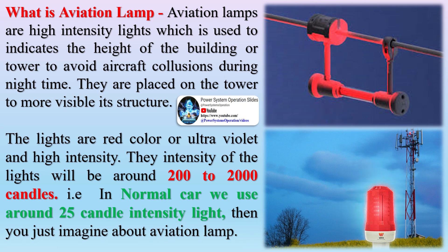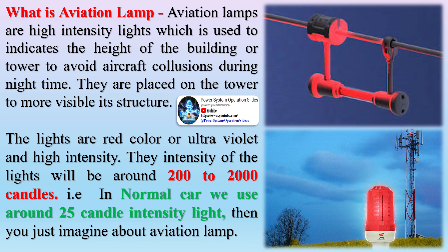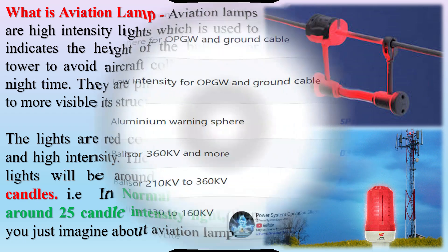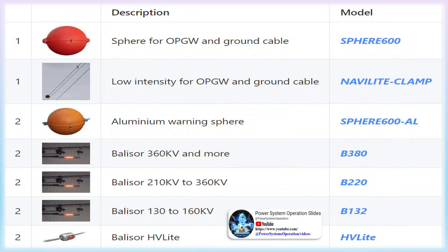For maximum visibility and collision avoidance, these lighting systems commonly employ one or more high-intensity strobe or LED devices which can be seen by pilots from many miles away from the obstruction.